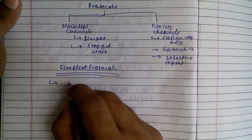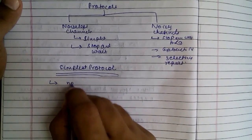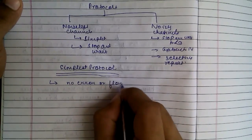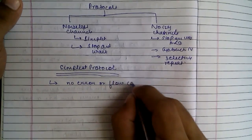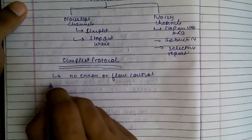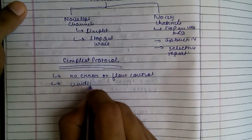So this protocol has no error or flow control as it assumes that the medium is ideal and the data will be unidirectional.